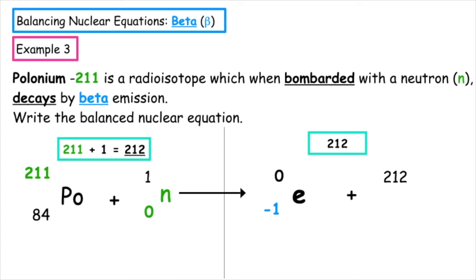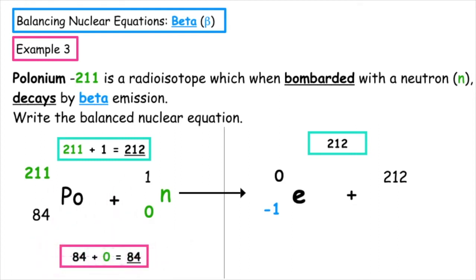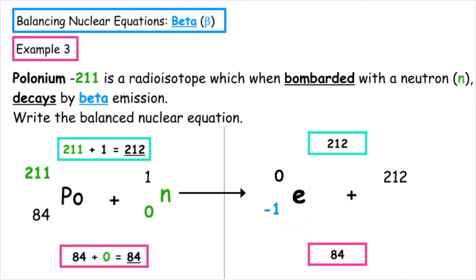On the reactant side, we have 84 plus zero, giving a total of 84, so the right-hand side also has to total 84. Minus one plus what gives 84, so the atomic number is 85. Looking up element 85, we find astatine, chemical symbol At.